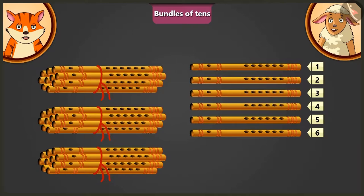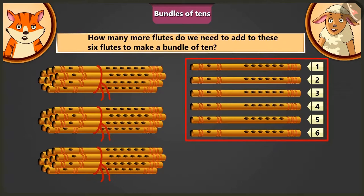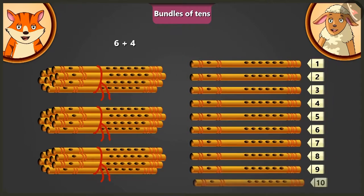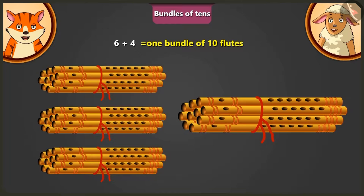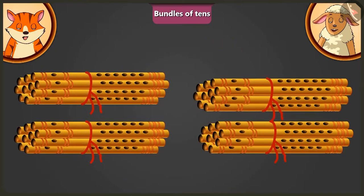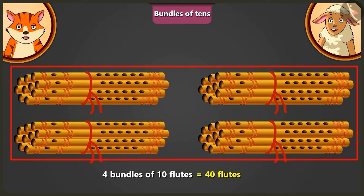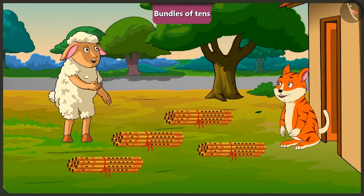Come Lily, now tell me — adding how many flutes to these 6 flutes will make 1 bundle of 10? Yes, now here we have 4 bundles of 10 flutes each. That means there are total 40 flutes. Well done, Lily.